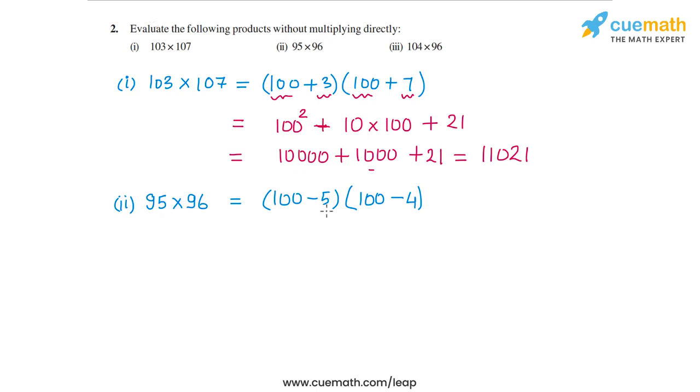So I can write this as 100² plus (a+b) times x. So a plus b in this case is minus 9, so minus 9 times 100 plus ab. So minus 5 times minus 4 is plus 20.